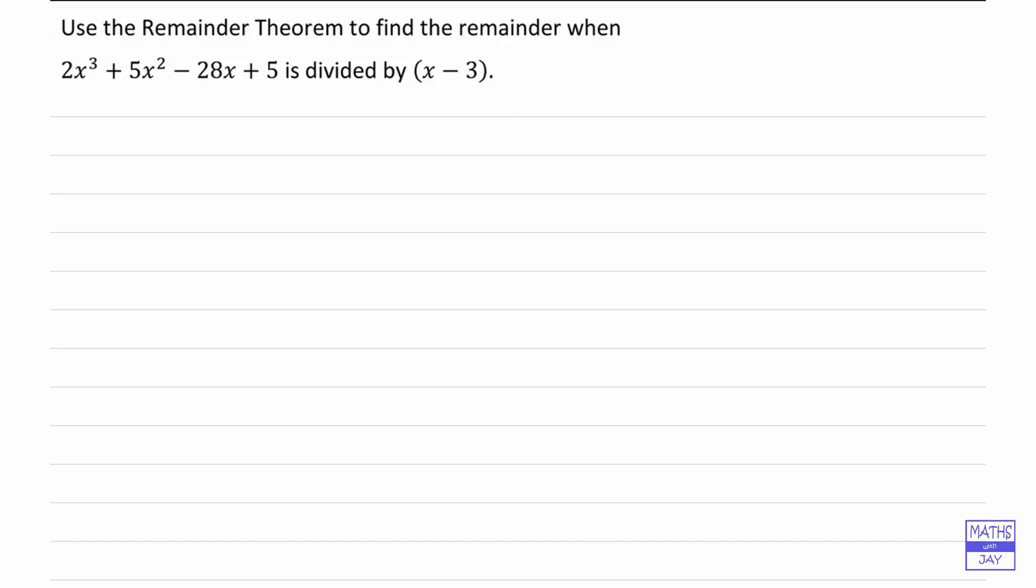So let's just write down the general format of the remainder theorem. The important thing is that when we divide a polynomial f of x by x minus a, the remainder is simply the value that we get when we substitute a into the polynomial, so that's f of a.